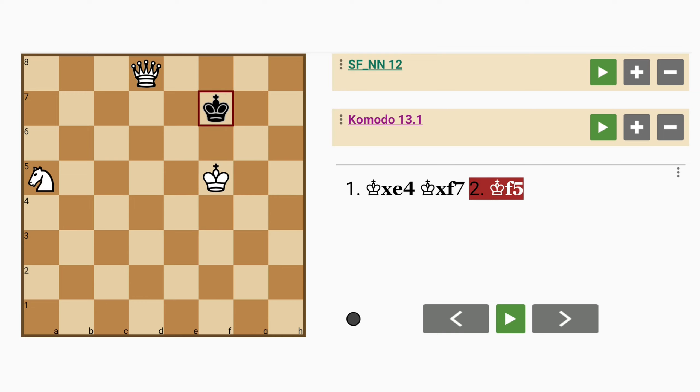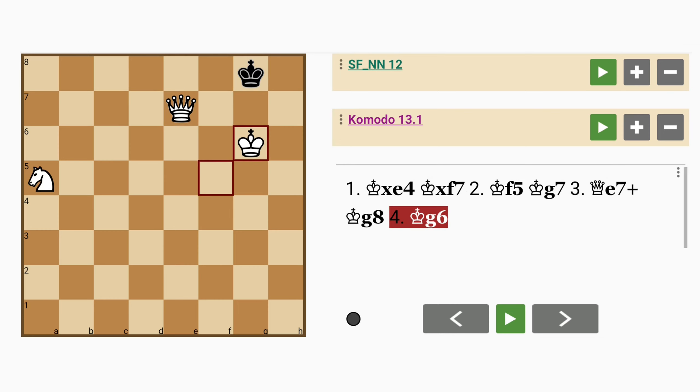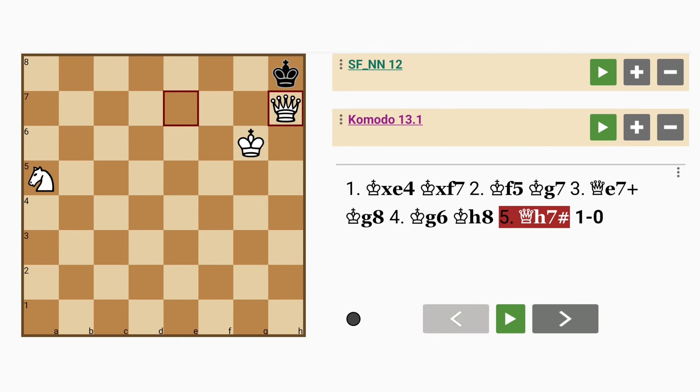Force the mate: king to f5, king to g7, queen to e7 check, king to g8, king to g6. I think you can see where this is going - king to h8 and queen to h7 checkmate on the fifth move.